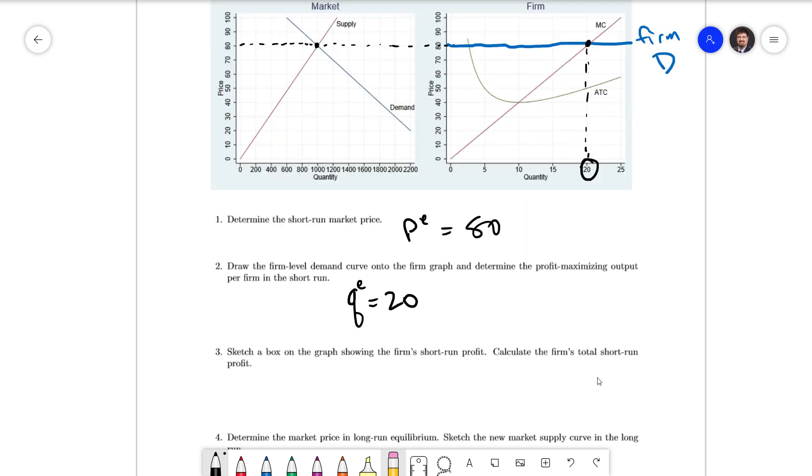Next we're going to sketch a box on the graph showing the firm's profit. We're going to use the formula for profit pi equals q times p minus ATC. We know q is 20, p is 80. We can find the average total cost by looking on the graph. At a quantity of 20 we have an average total cost of 50.